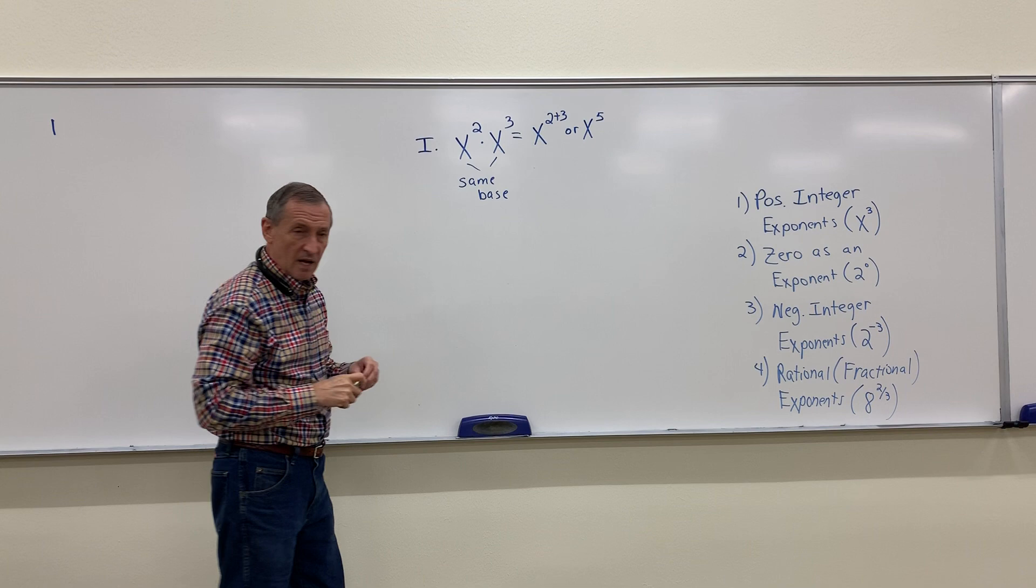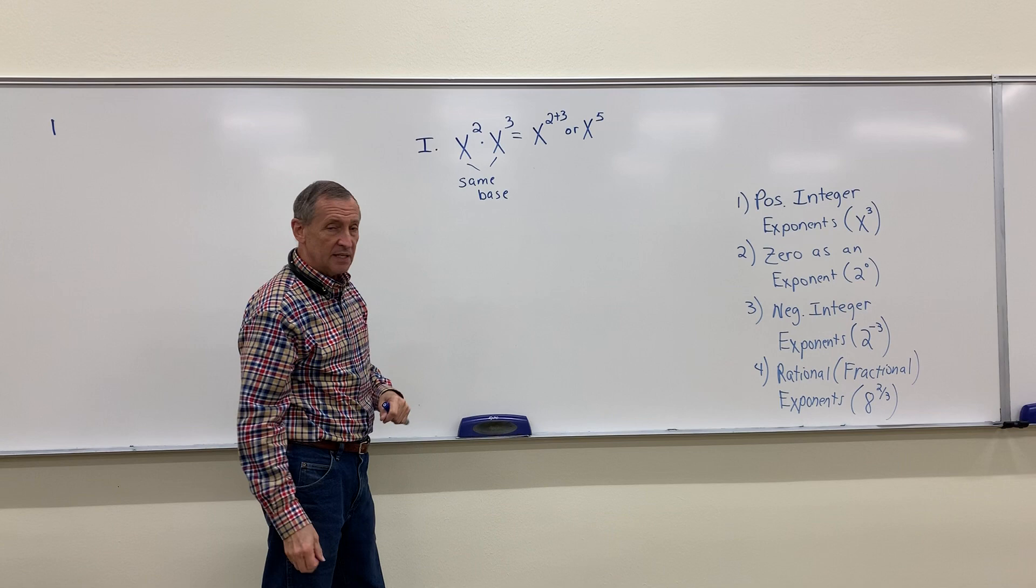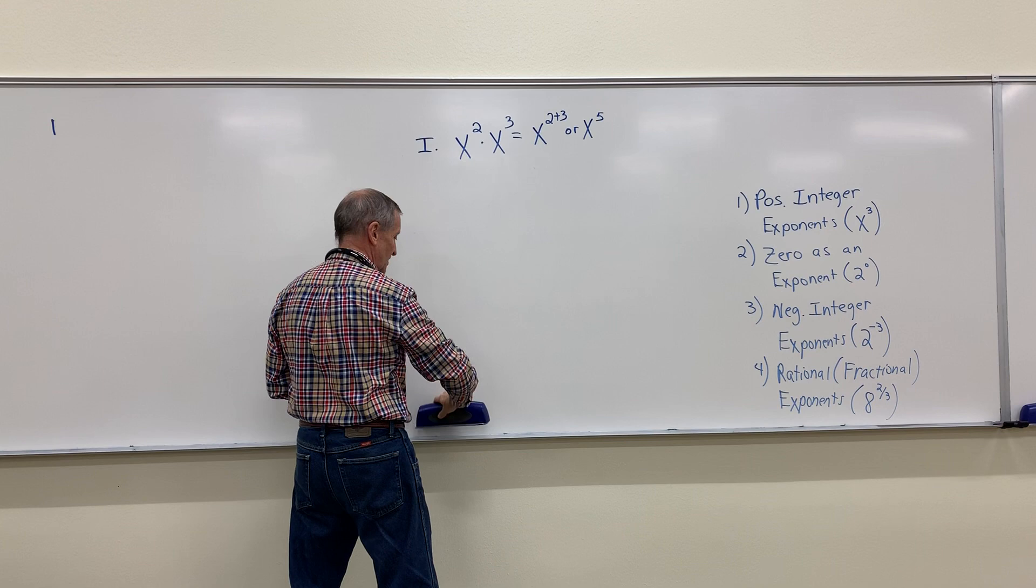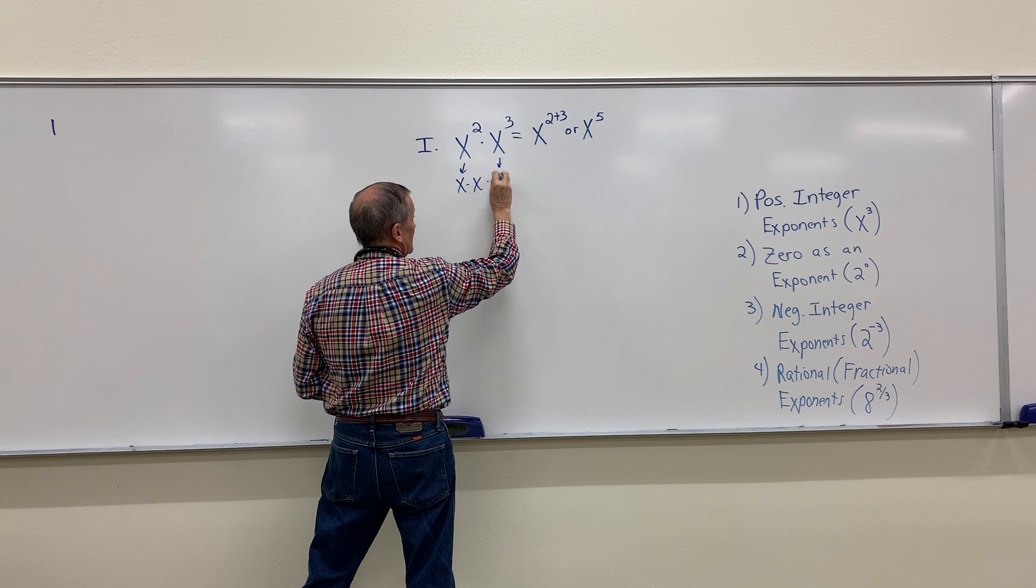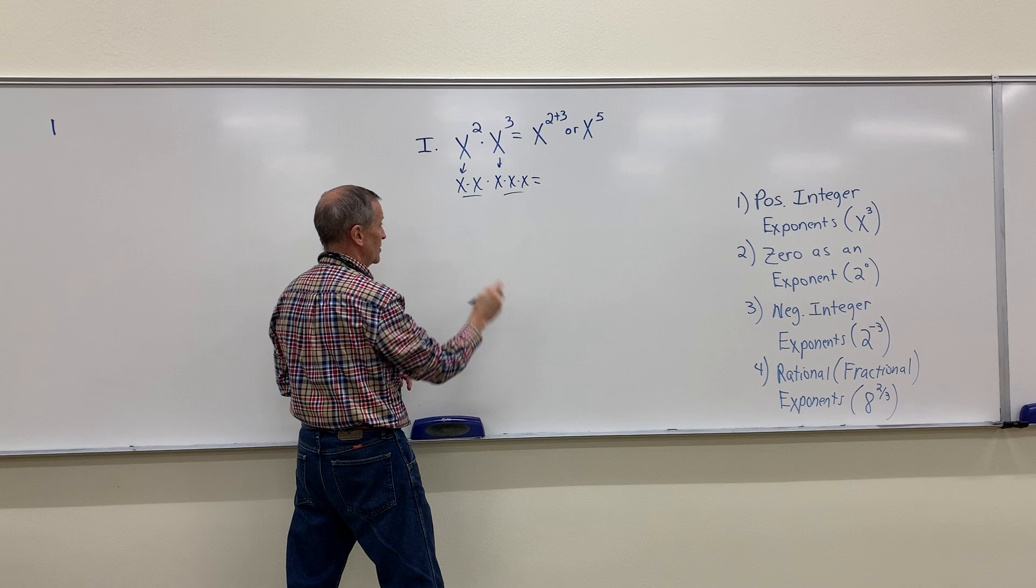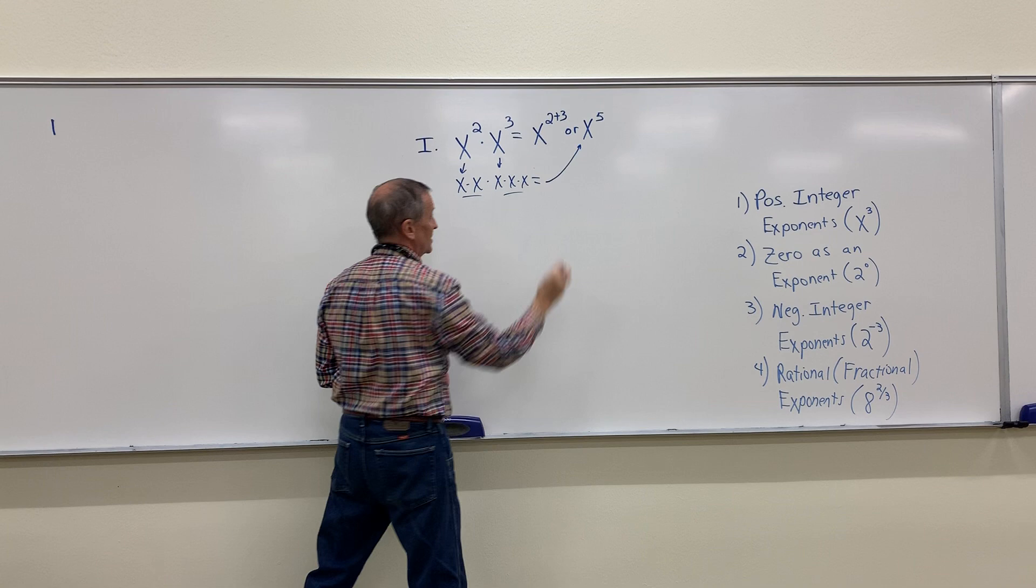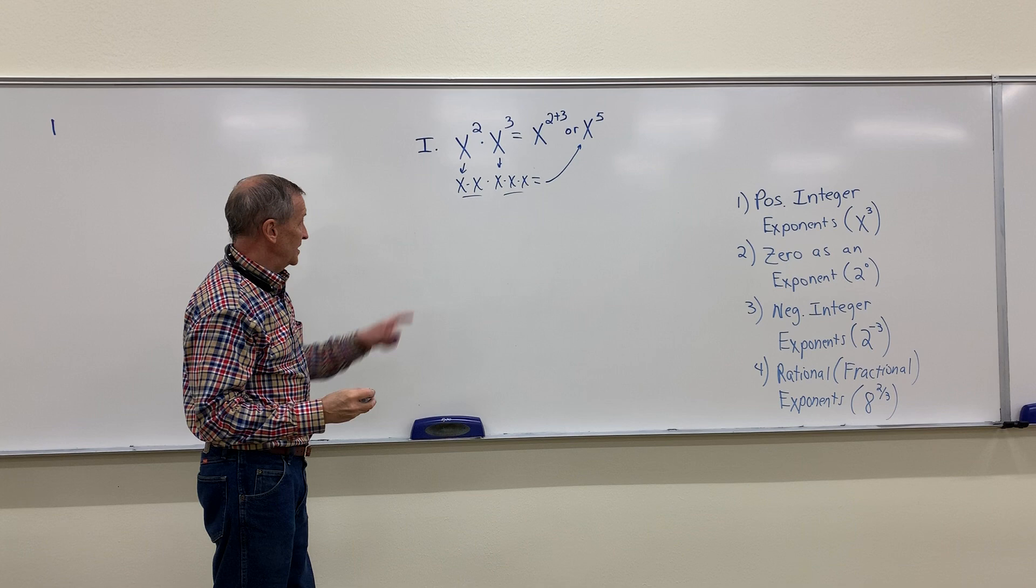Now that's possibly confusing to you, because probably every time you've had a multiplication problem with a 2 and a 3, you've got a 6 somewhere, but here I am ending up with a 5. But go back to your definition of positive integer exponents. x² just means 2 x's multiplied, right? x³ just means 3 x's multiplied. There's my x², there's my x³. We have a shortcut way of saying 5 x's multiplied. We say that's x⁵. That's your first property of exponents.